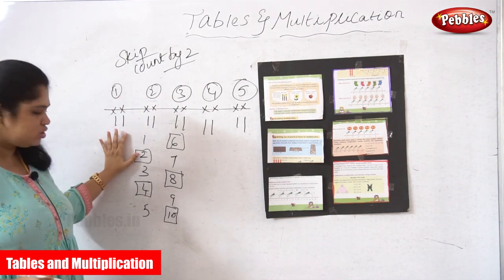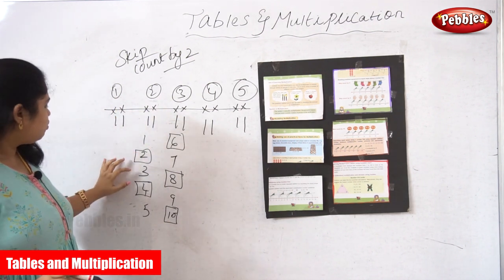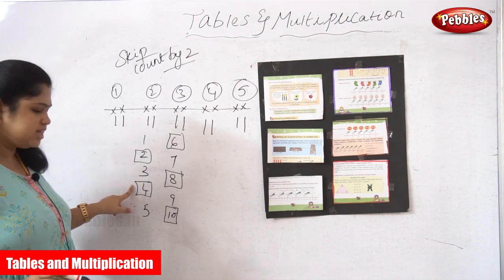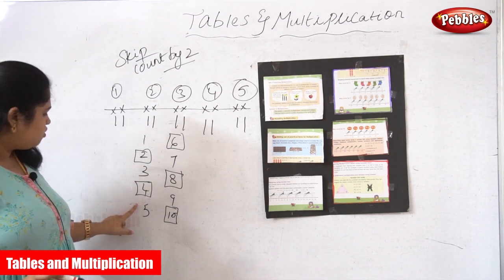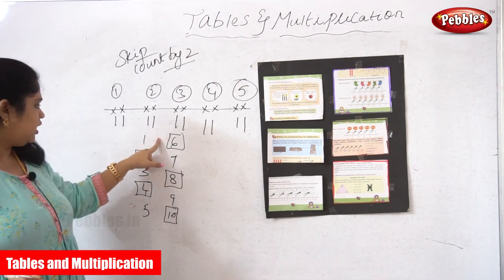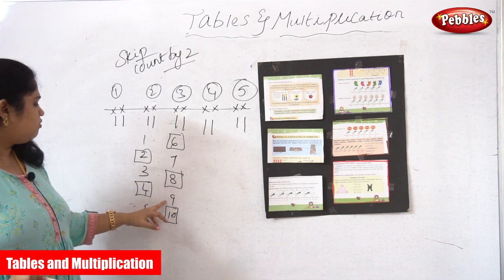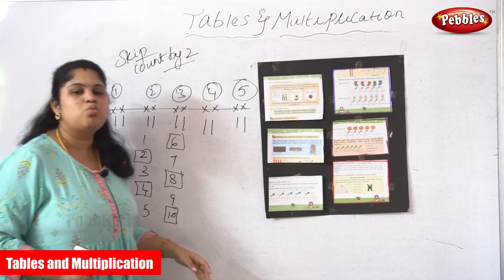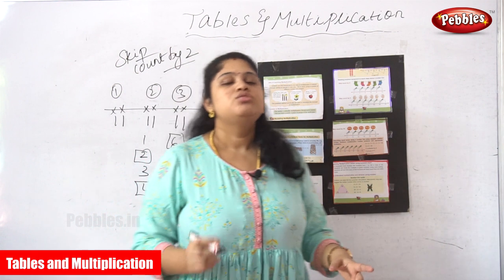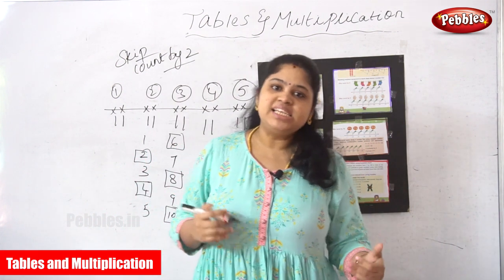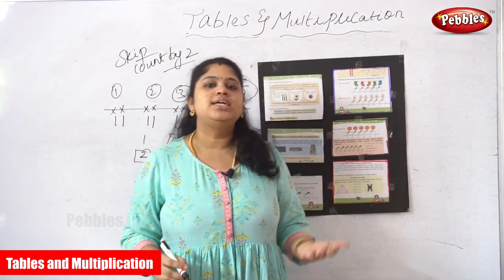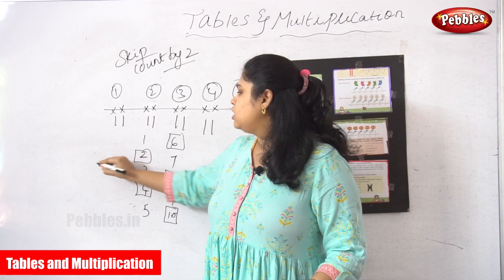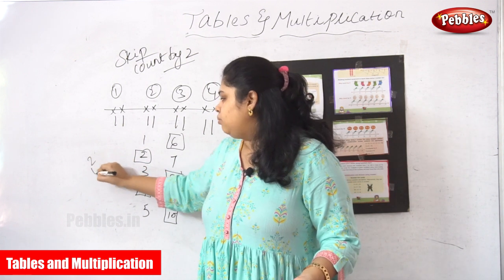We start with two and skip two numbers each time. There is a first number and a second number — first number, second number, first number, second number — we take only the second number each time. This is what skip count by two is. And what is the need to study skip count by two? It is the two times table.